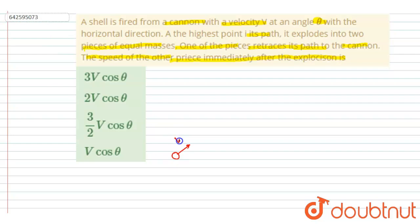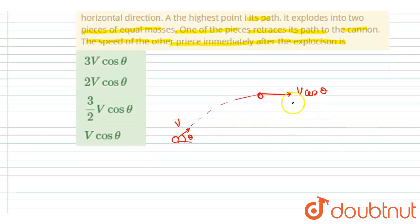projectile projected with velocity v. At the highest point it has a horizontal component of velocity that is v cos theta. At this position it breaks into two parts. This is having mass m, and after breaking the two parts will have mass m by 2, m by 2. Now it is said in